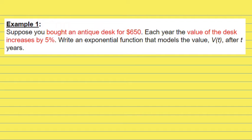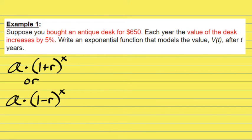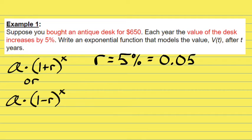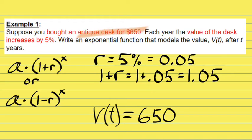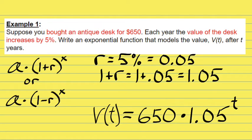Here's a word problem: suppose you bought an antique desk for $650, and each year the value increases by 5%. Write an exponential function. Because the value is increasing, we use 1 plus R. With 5% in decimal form as 0.05, we have 1.05. The function is called V of T. The initial value is $650, so V of T equals 650 times 1.05 to the power of T.